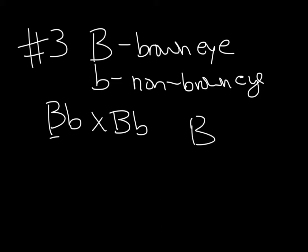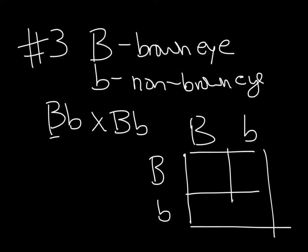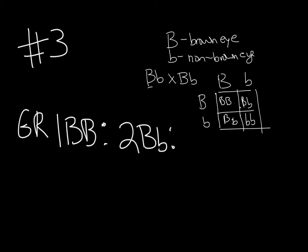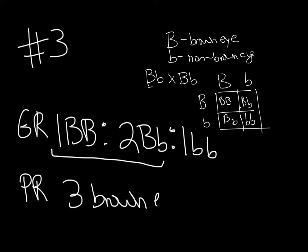Each parent can give either big B's or little B's, giving us four possible offspring combinations. The genotypic ratio is 1 big B big B, to 2 big B little B, to 1 little B little B. For the phenotypic ratio, brown eyes is completely dominant, so all three of the dominant-containing boxes get brown eyes. That's 3 brown eyes for every 1 non-brown eyes — the classic 1:2:1 genotypic and 3:1 phenotypic ratio showing complete dominance.